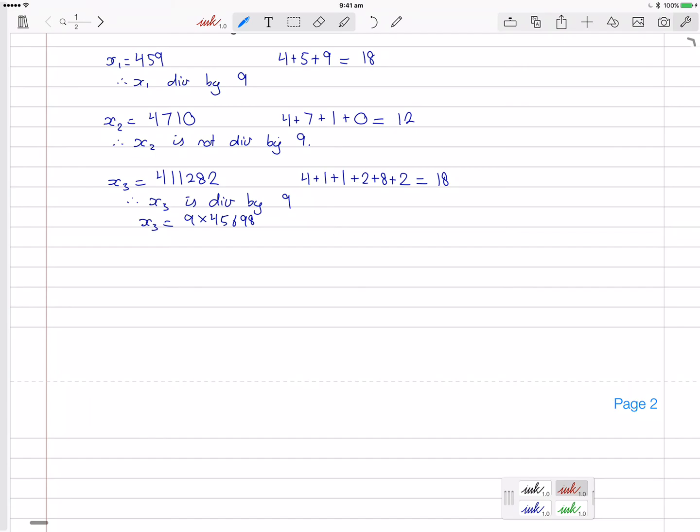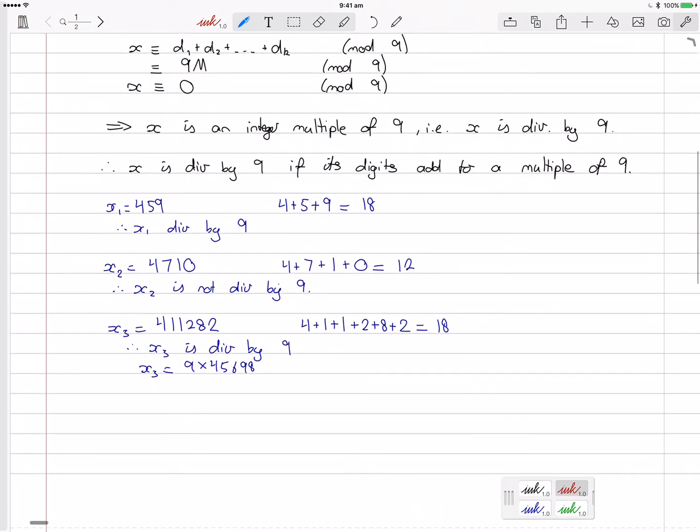And the only thing that would be different would be that in our final statement, x is divisible, not by 3, by 9. I would now say by 3 here and by 3 here. So x is divisible by 3 if its digits add to a multiple of 3.